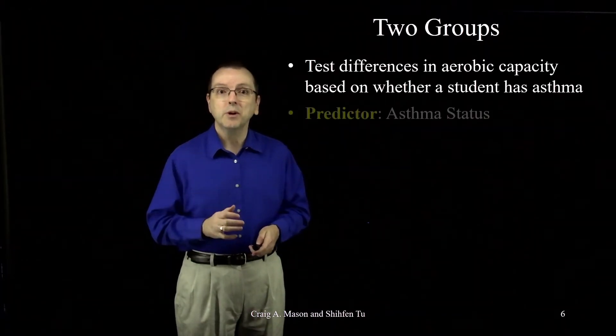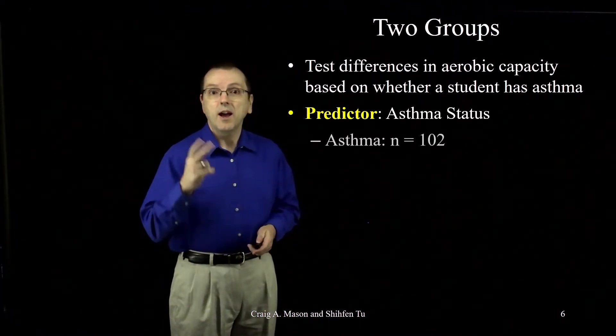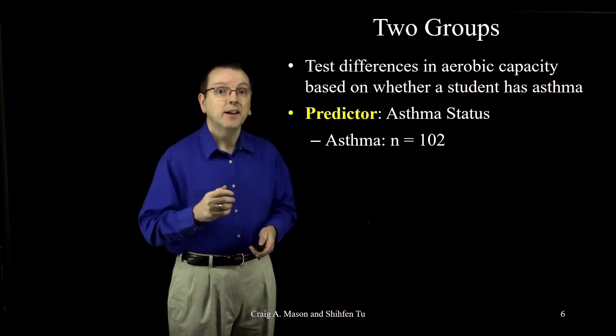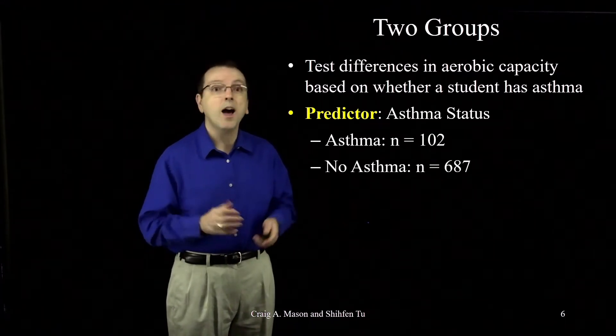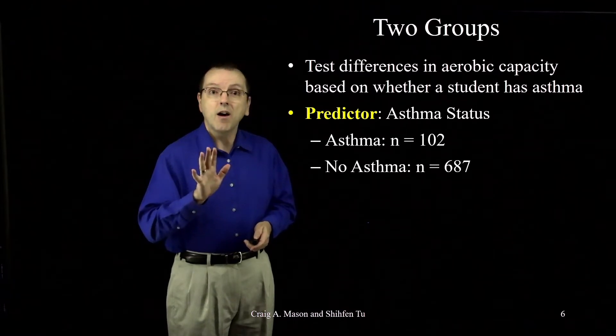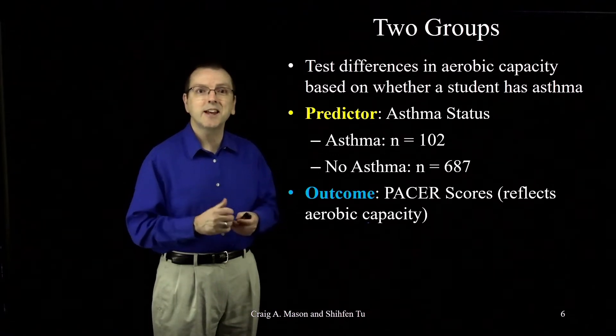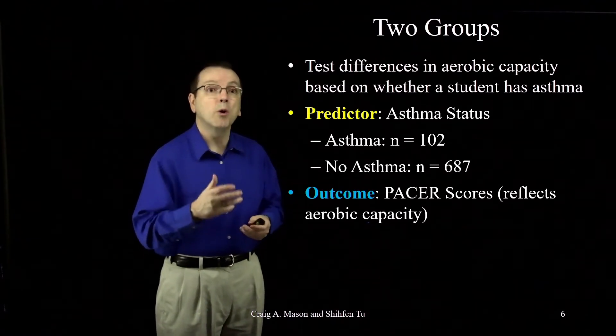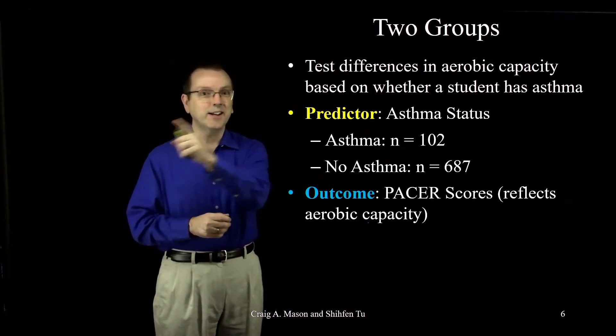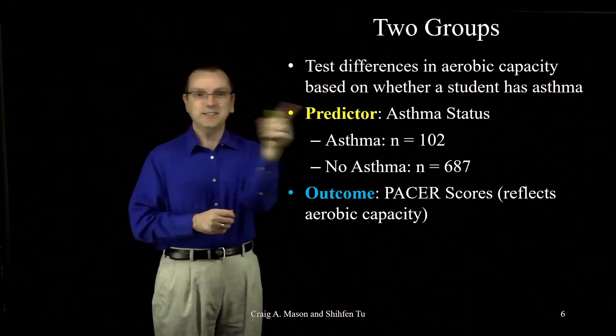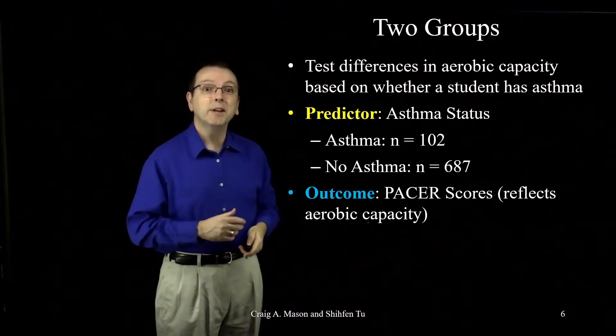So our predictor was asthma status, which reflected two groups: 102 students who had asthma and 687 students who did not. Our outcome was scores on the PACER, an exercise test that reflects one's aerobic capacity. In it, you run back and forth at a steadily increasing pace with your score being the number of laps that you complete.